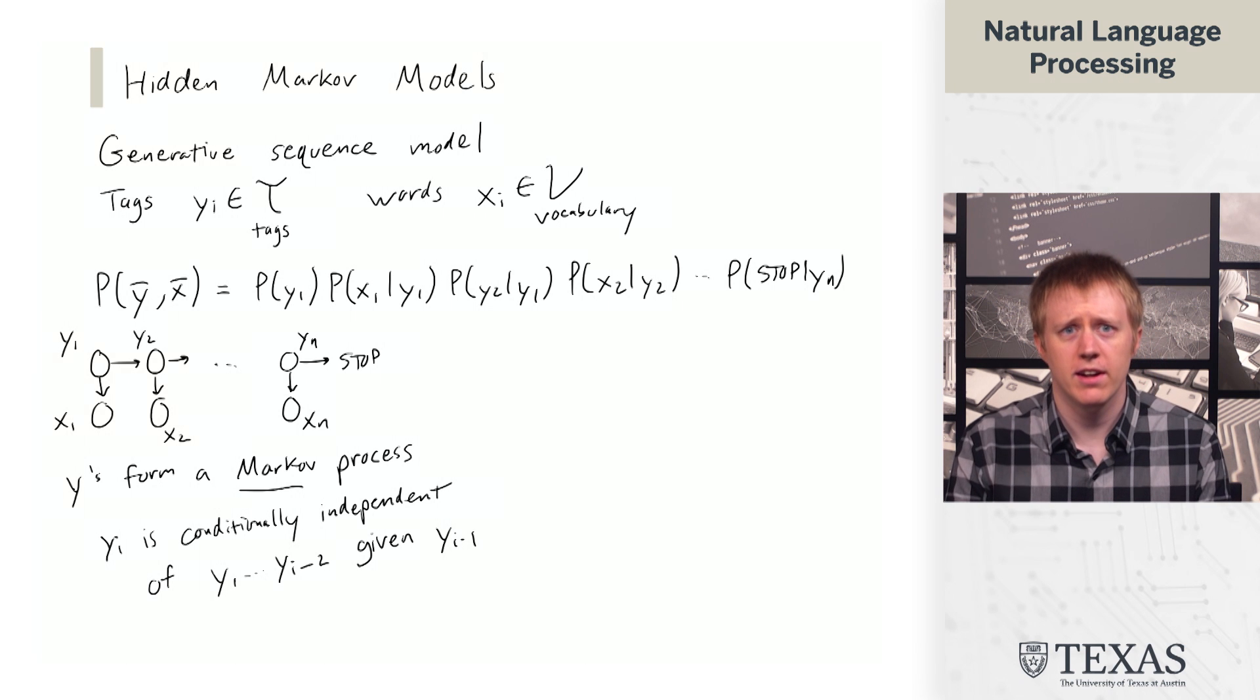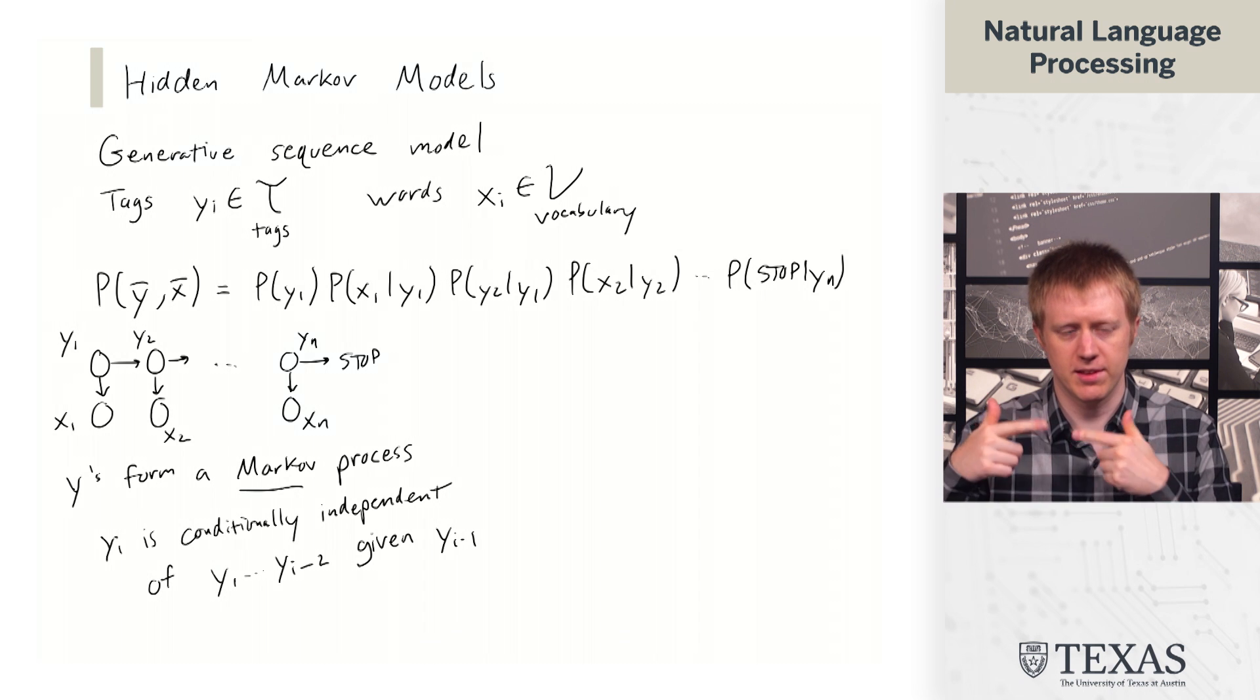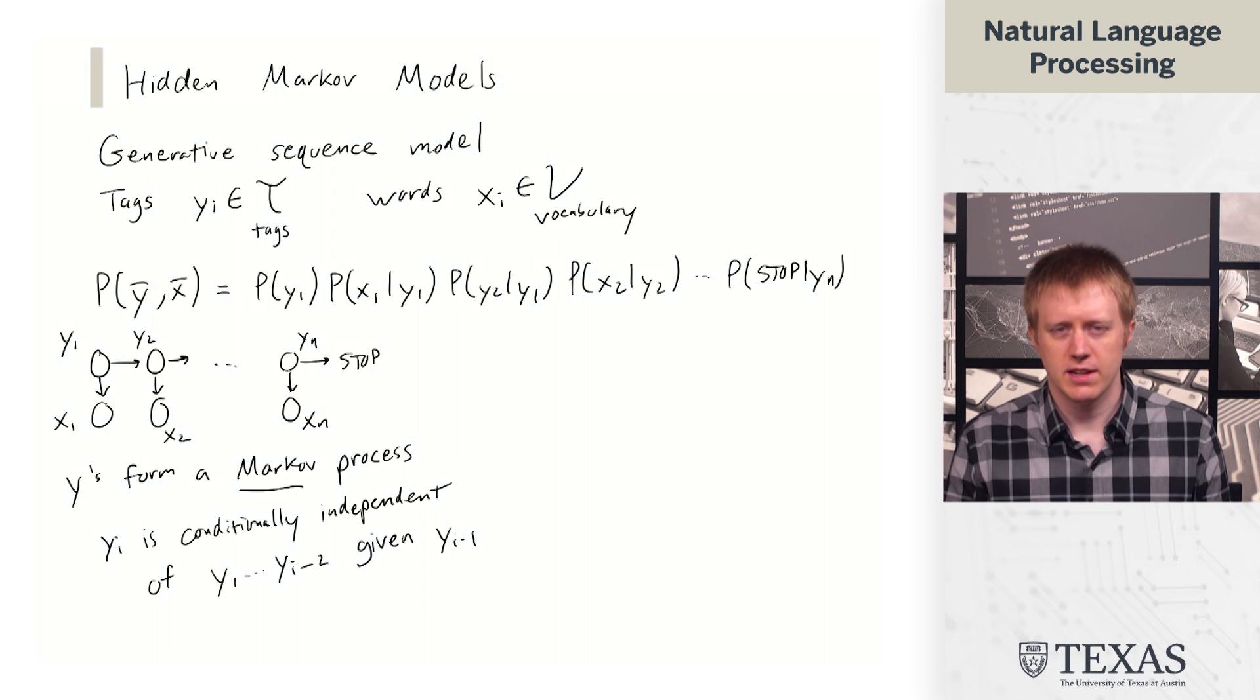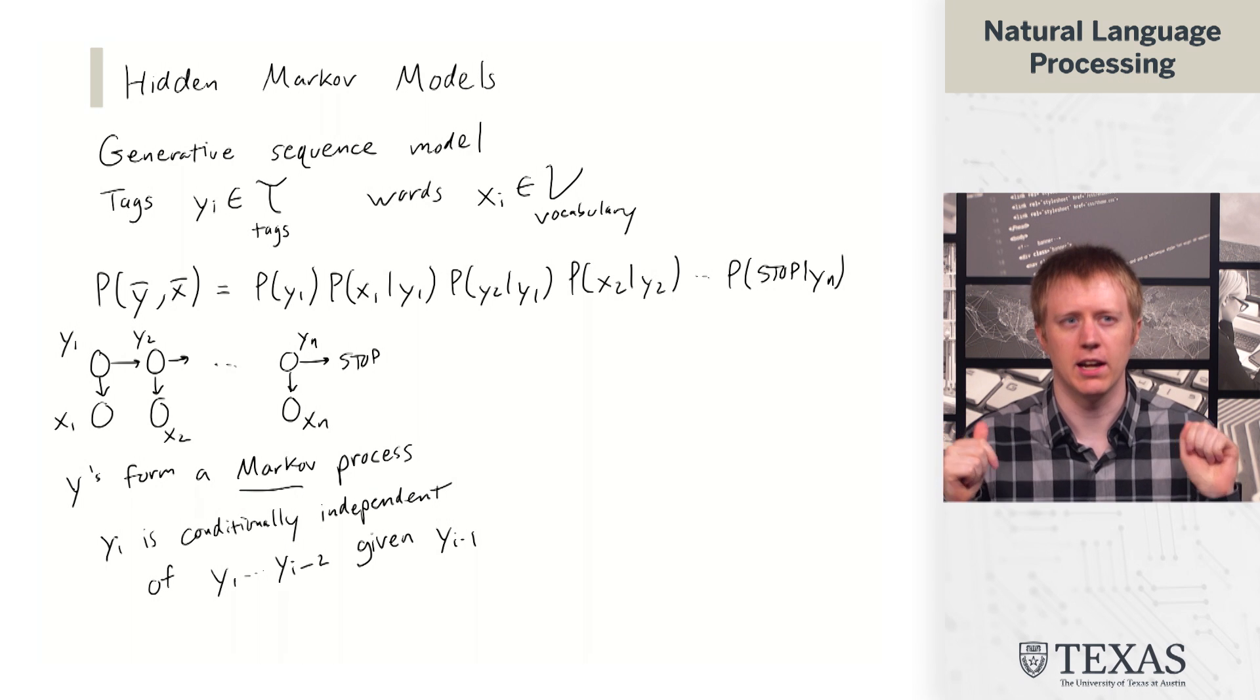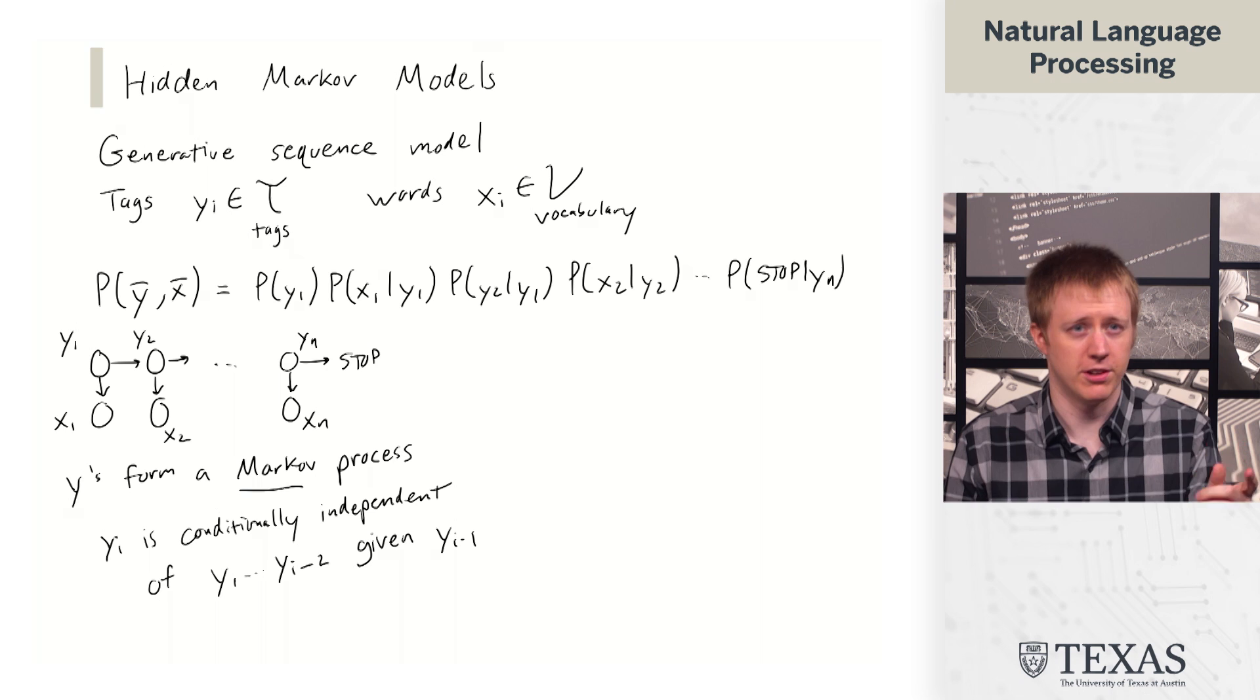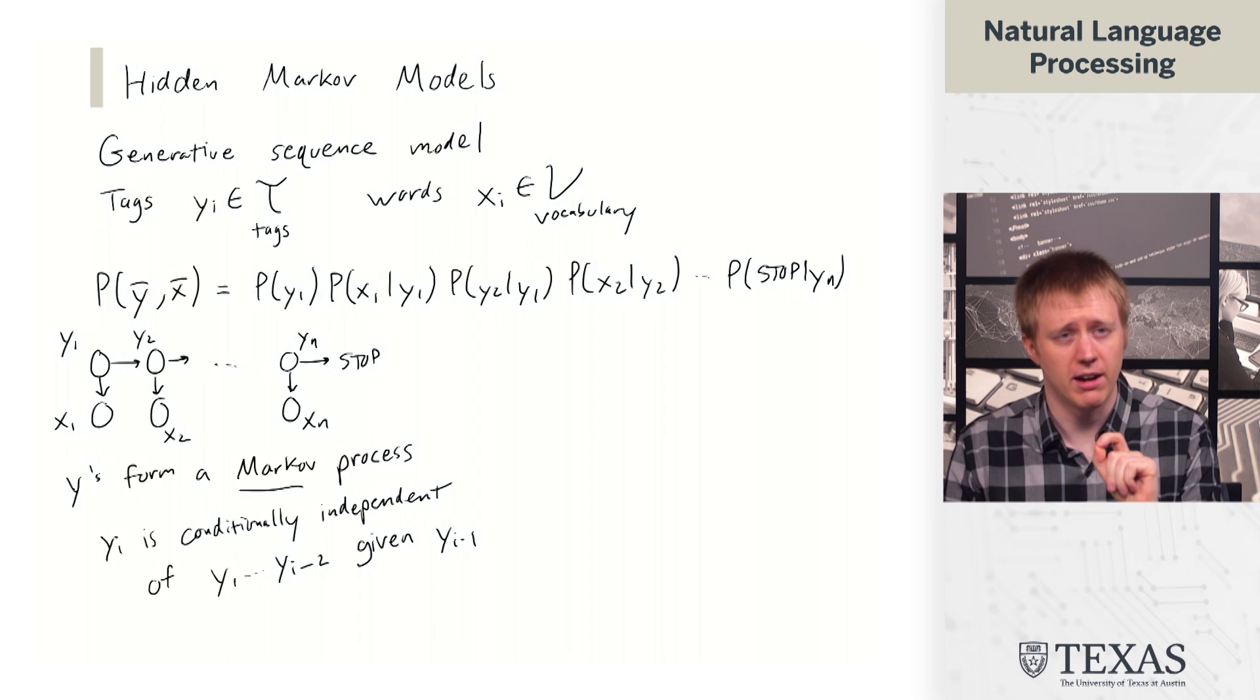And so the idea here is that the part of speech tags themselves are giving us this sort of syntactic skeleton of a sentence, right? Like, okay, you're going to have a, maybe if you have a determiner, and then you're going to have a noun, and then maybe there's some chance of having a verb after that, right?